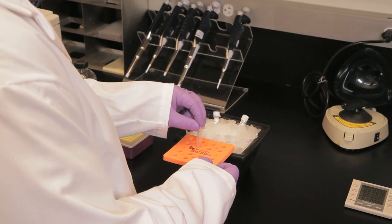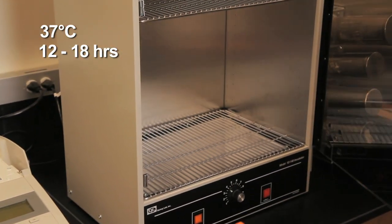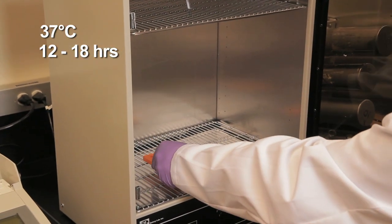Incubate both tubes at 37 degrees Celsius for 12 to 18 hours, during which time the BGT will add glucose to the hydroxyl group of 5-hydroxymethylcytosine groups in the sample.